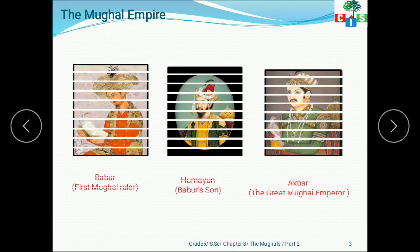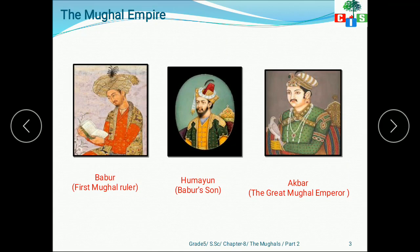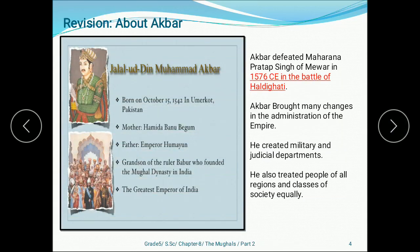Let's look at the pictures — this is Babar, the first Mughal emperor; this is Humayun, Babar's son; and this is Akbar, the great Mughal emperor. Now let's discuss Akbar. His full name was Jalaluddin Muhammad Akbar. He was born on October 15, 1542 in Umerkot, Pakistan. His mother's name was Hamida Banu Begum and his father was Emperor Humayun. He was the grandson of Babar, who founded the Mughal dynasty in India.